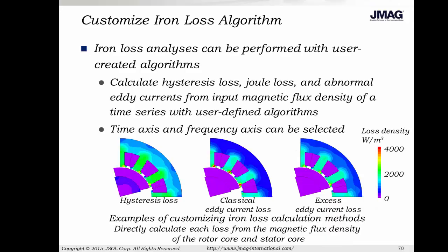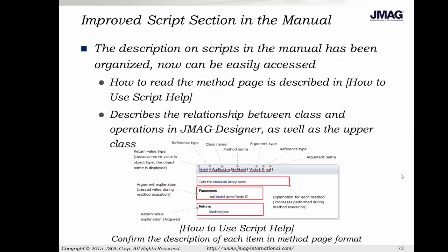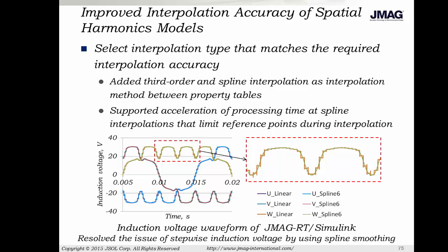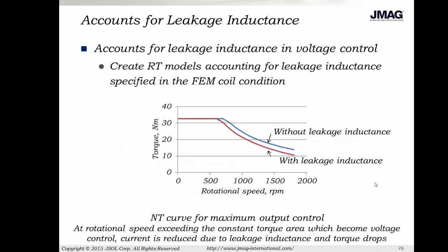In terms of customization, we now have a custom iron loss algorithm. JMAG has been working hard to develop its own internal iron loss calculation tool, but you can also create your own custom defined iron loss calculation and apply it to the model, pulling results from the JMAG analysis and running them in your own separate iron loss tool. There's been a big increase in the number of users using scripting, so the section on scripting in the user manual has been improved and organized for easy access. The description covers how to use the script and describes the relationship between the class, upper operations, and JMAG Designer. For JMAG RT, we've improved the interpolation accuracy of spatial harmonics models by adding a third order spline to smooth data instead of looking jagged, providing a nice smooth interpolated waveform. We've also added accounting for leakage inductance, so this leakage inductance in the coil calculation can change the results for our RT curves.